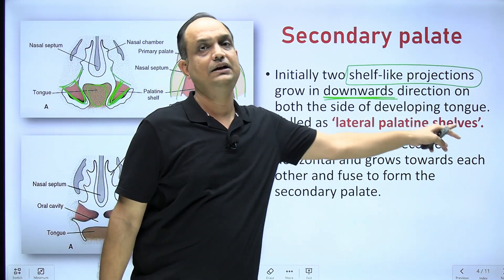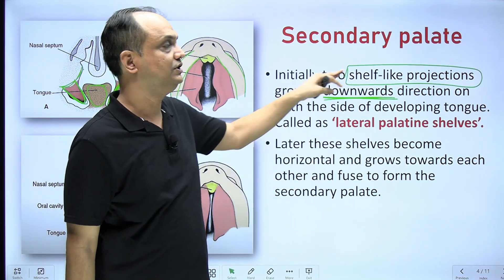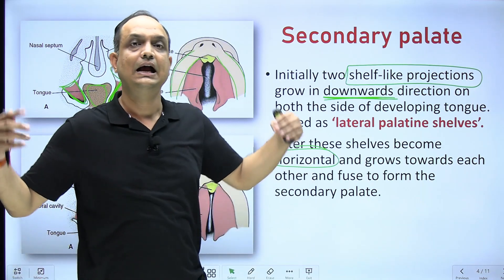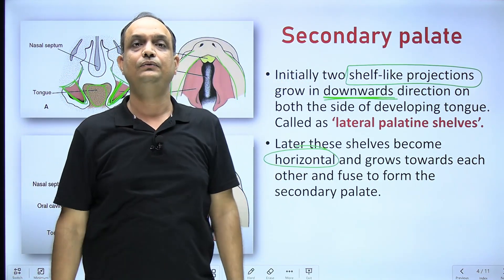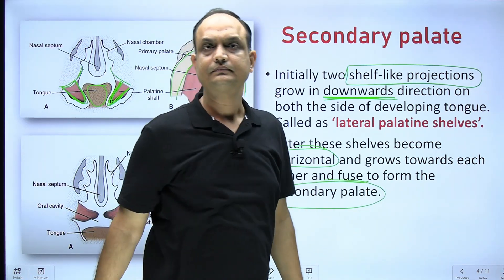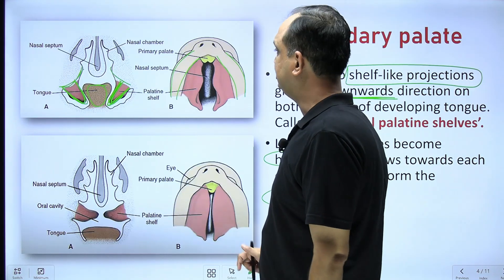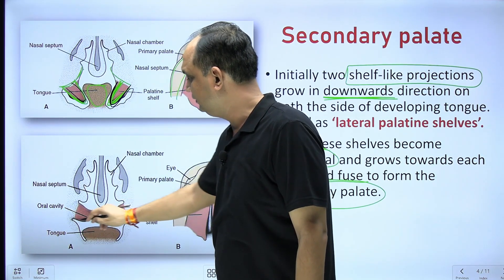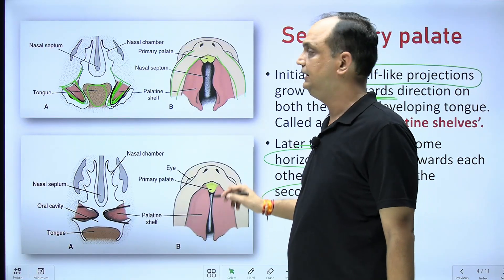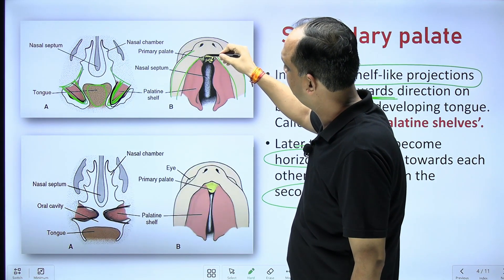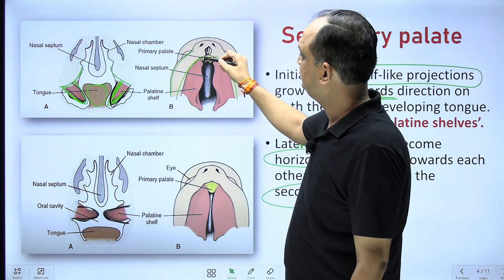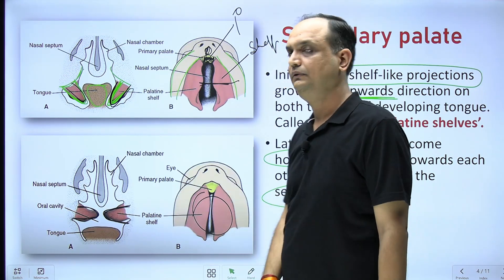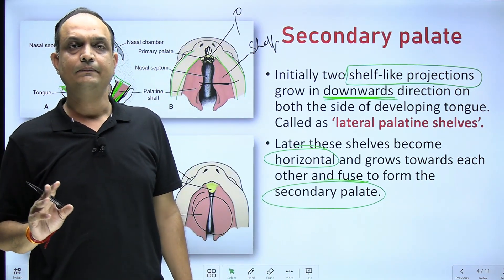Later on, as growth occurs, these shelves become horizontal. Once horizontal, they grow toward each other to fuse, and their fusion forms the secondary palate. So initially the palatine shelves are downward directed; later they become horizontal and fuse with each other. The projection from the inner side of the developing intermaxillary area forms the primary palate, and the shelves that become horizontal form the secondary palate.